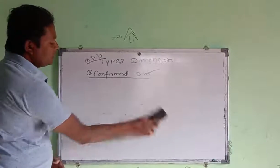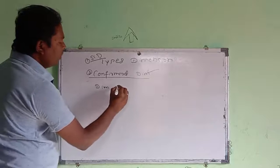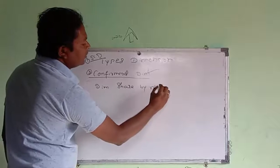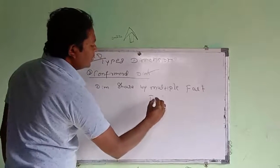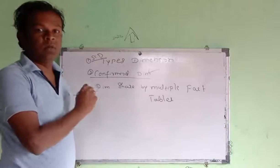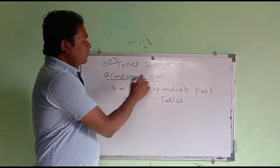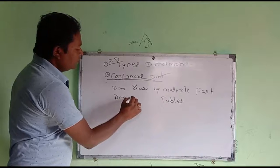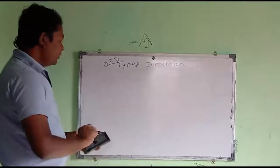So what is a Confirmed Dimension? A Confirmed Dimension is a dimension table that is shared by multiple fact tables. For example, a DIM table used across multiple fact tables is called a Confirmed Dimension table.